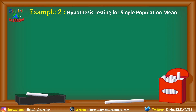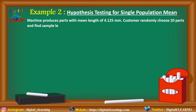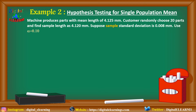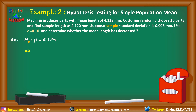Let us take another example for hypothesis testing for single population mean where the sample standard deviation is given. A machine produces parts with a mean length of 4.125 mm. A customer randomly chooses 20 parts and finds the sample length as 4.12 mm. The sample standard deviation is 0.008 mm. With alpha equal to 0.1, we determine whether the mean length has decreased.